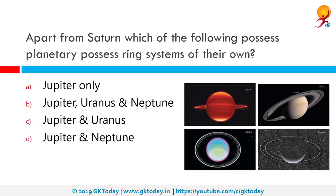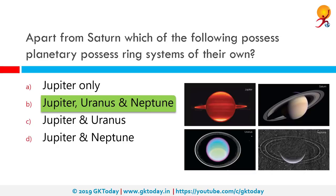Apart from Saturn, which of the following planets possess a planetary ring system of their own? The correct answer is Jupiter, Uranus and Neptune. Four of the eight planets in the solar system have rings: Jupiter, Saturn, Uranus and Neptune. Saturn, which has by far the largest ring system, was known to have rings for a long time. It was not until the 1970s that rings were discovered around the other planets.